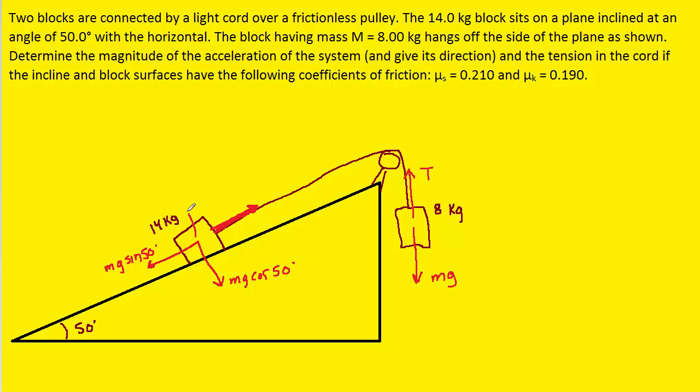The other component will be mg times the cosine of that same angle. Now, we also have a normal force that's pushing upward on the box, and we can call that N. And then, because there's friction, we have a frictional force acting.